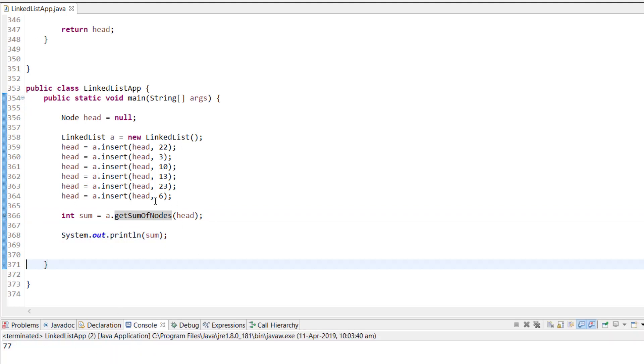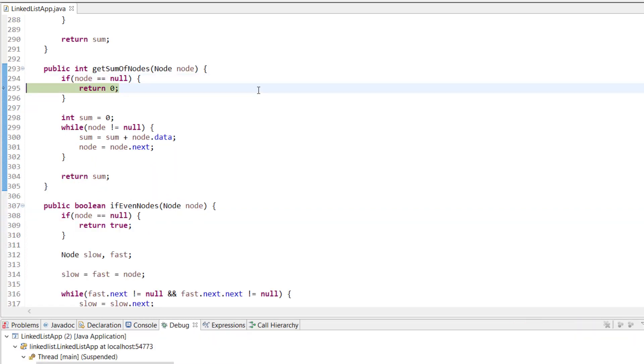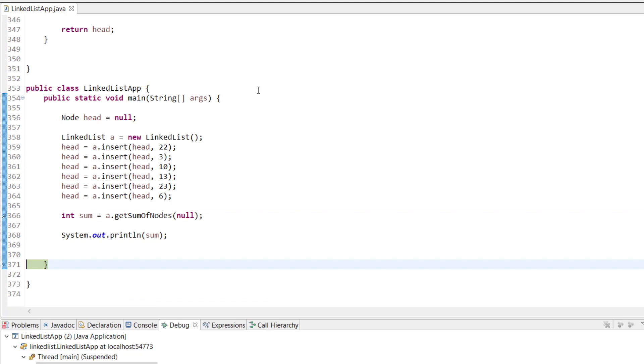For the negative test case, let's say you're passing null. It will check if node equals null, then return 0. In this case, we'll get the output of 0.